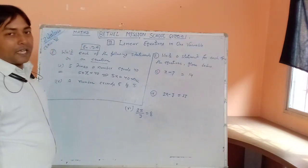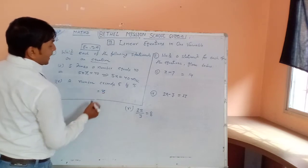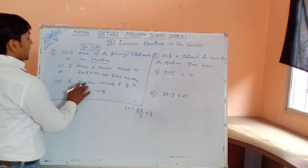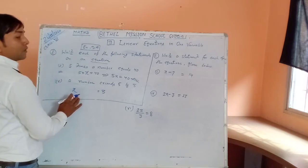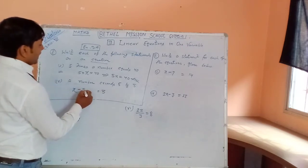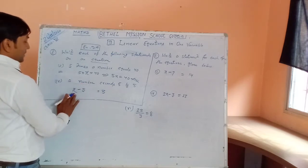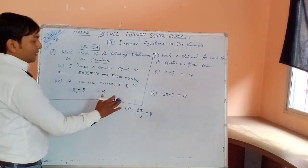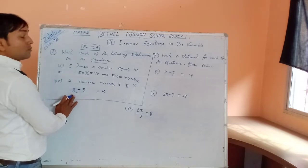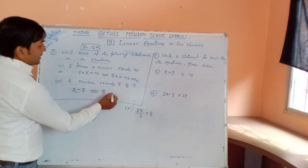The next statement is: 'A number exceeds 5 by 3.' There is an unknown number x, and it exceeds 5 — meaning x is more than 5. When both sides are equal, if we subtract 5 from x, only then they will be equal. So a number exceeds 5 by 3 gives us x - 5 = 3.